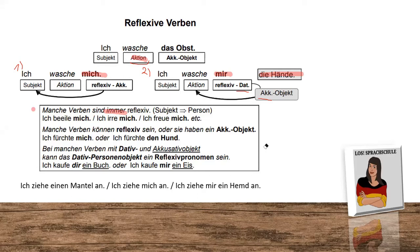Next: 'Manche Verben können reflexiv sein oder sie haben ein Akkusativobjekt.' The Akkusativobjekt is the gray part here. We can either say 'Ich fürchte mich' — I'm afraid — or the second option: 'Ich fürchte den Hund' — I am afraid of the dog. Here we have no reflection.